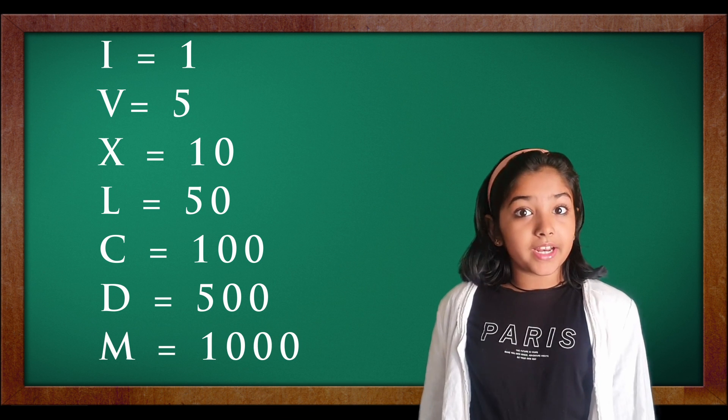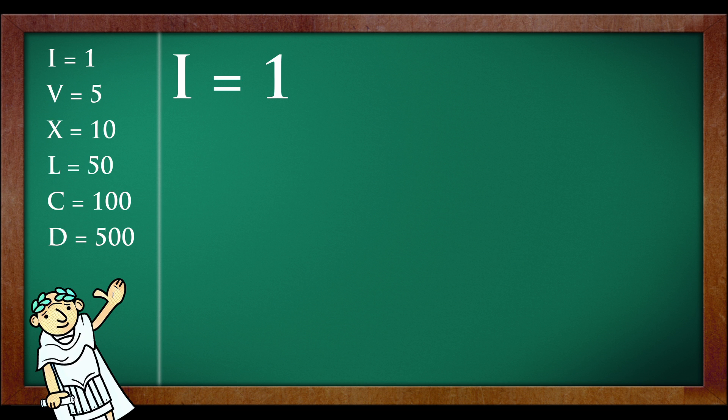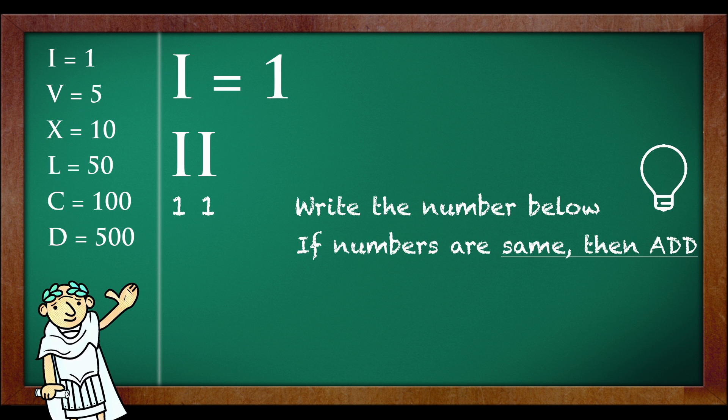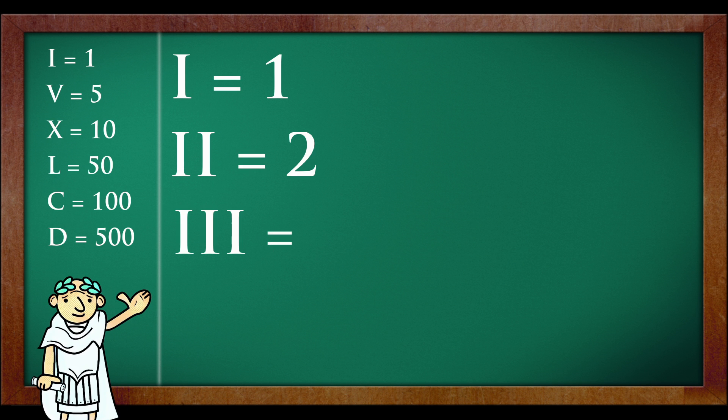Let's begin with simple numbers. From the table, now I is equal to 1 so you can keep that as 1. Now what is 2 I's? Write the number below 1 and 1. If the numbers are same, add them. 1 plus 1 is equal to 2. Similarly, because 3 I's are same, add 1 plus 1 plus 1 which is equal to 3.